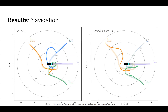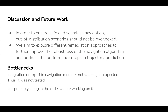Here is an example. In order to ensure safe and seamless navigation, out-of-distribution scenarios need closer attention, and we are constantly exploring different remediation approaches to further improve the robustness of the navigation algorithm and address the performance drops in trajectory prediction. As for bottlenecks, the integration I experimented with in the navigation model was not working as expected, so it was not tested — it is probably a bug in the code and we are working on it. These are the references, and thank you.